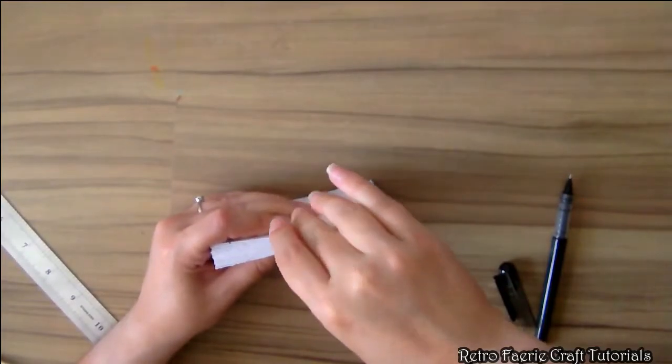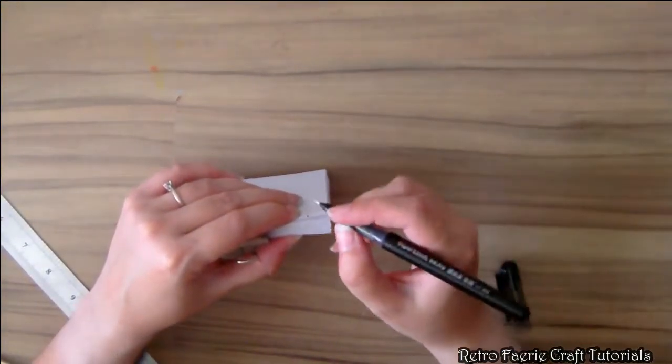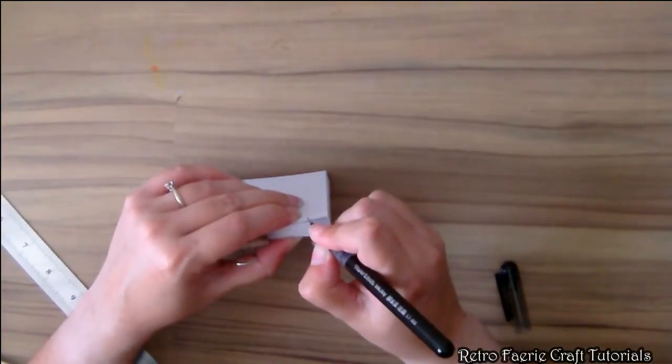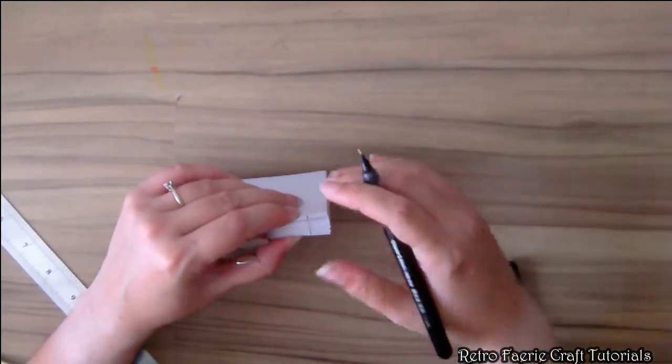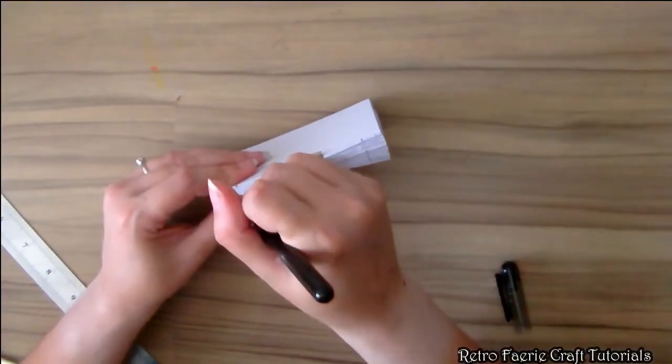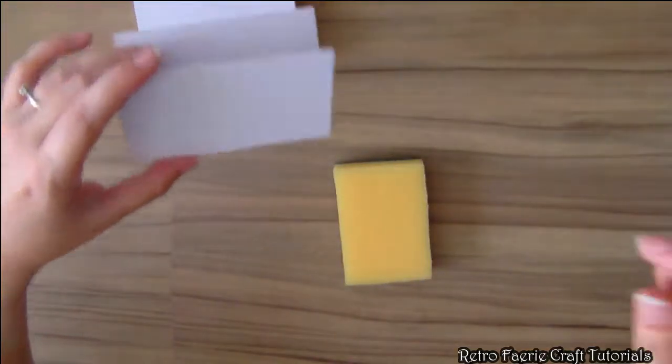Put that one back on top and clip them all together. Now I'm basically going to mark on every bit of paper in the same place where those original markings are along the spine. This way when I sew them together they'll all line up.